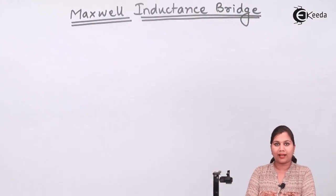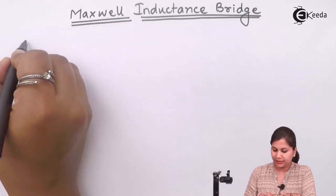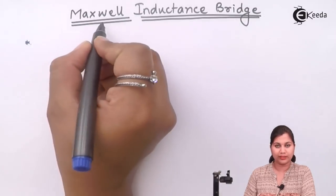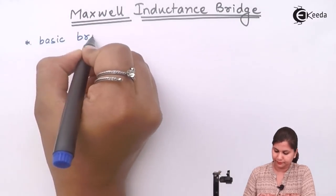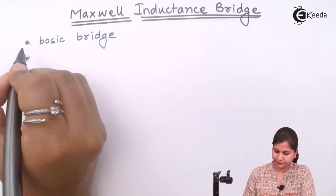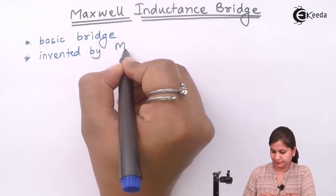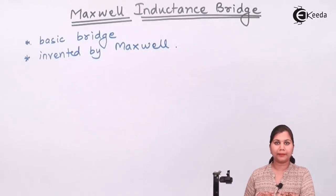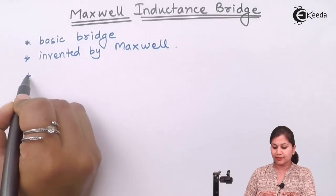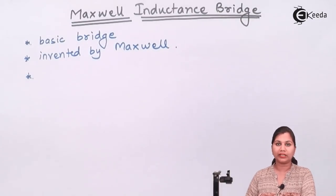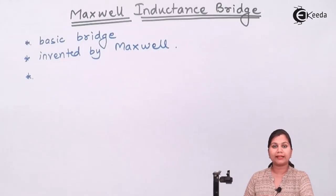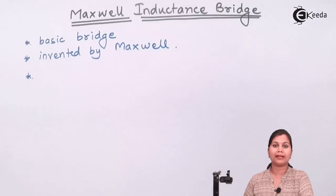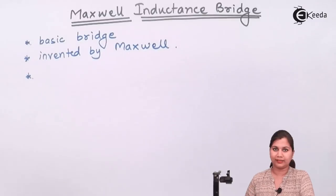This Maxwell inductance bridge is invented by the scientist Maxwell. It is the most basic and simple bridge in its construction, and it is used for the measurement of inductance. It measures inductance by comparing — the unknown value of the inductance is measured by comparing it with a known value of inductance, or a standard inductance.